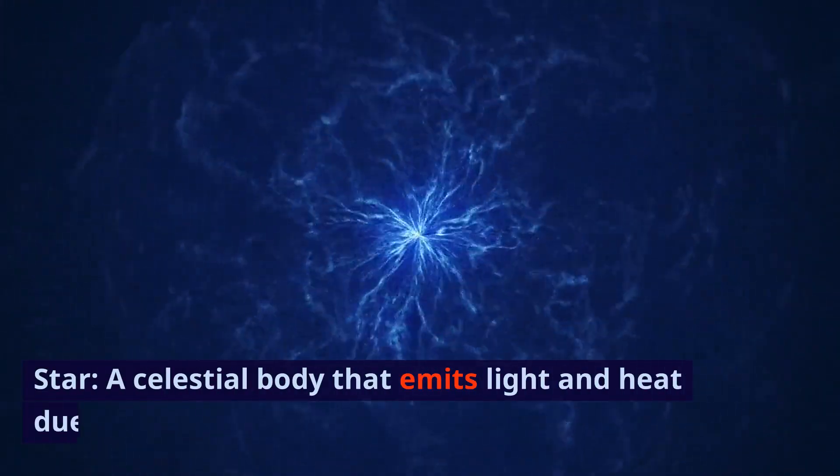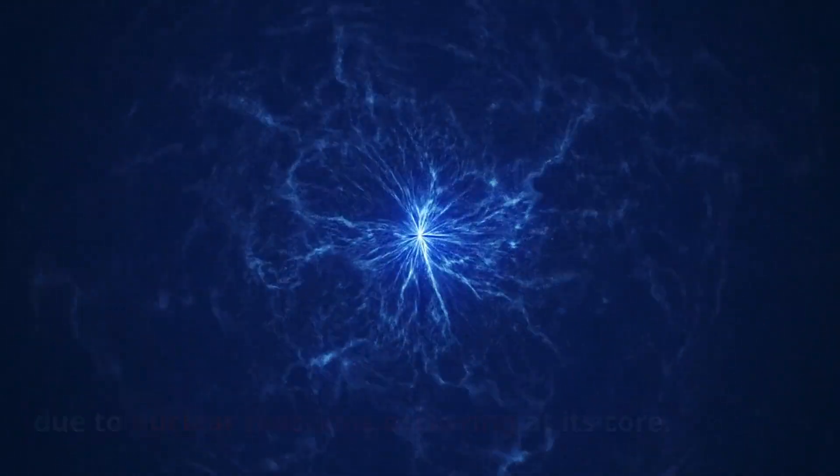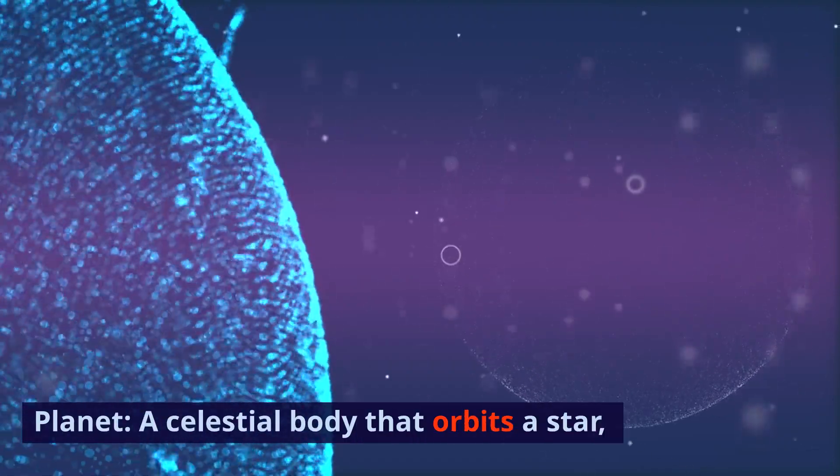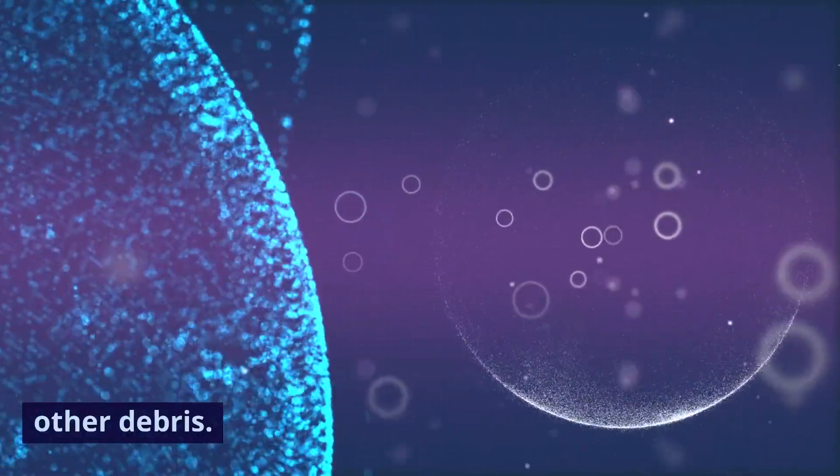Star. A celestial body that emits light and heat due to nuclear reactions occurring at its core. Planet. A celestial body that orbits a star, is spherical in shape, and has cleared its orbit of other debris.